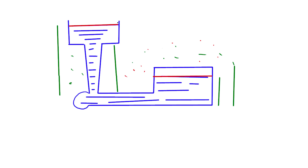In this particular case we have different points compared to the previous one. Point number one is the level we always maintain, and it is going to be at atmospheric pressure. Point number two is here, point number three is here, which is your gate on this particular structure. At point four, this is the level till which the pattern cavity is filled.